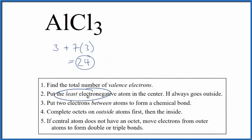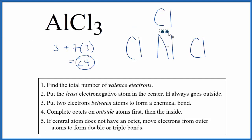We'll put the least electronegative atom in the center of our Lewis structure. That's the aluminum. Then we'll put three chlorines around it. Next, we're going to put a pair of electrons between atoms to form the chemical bond, like this.